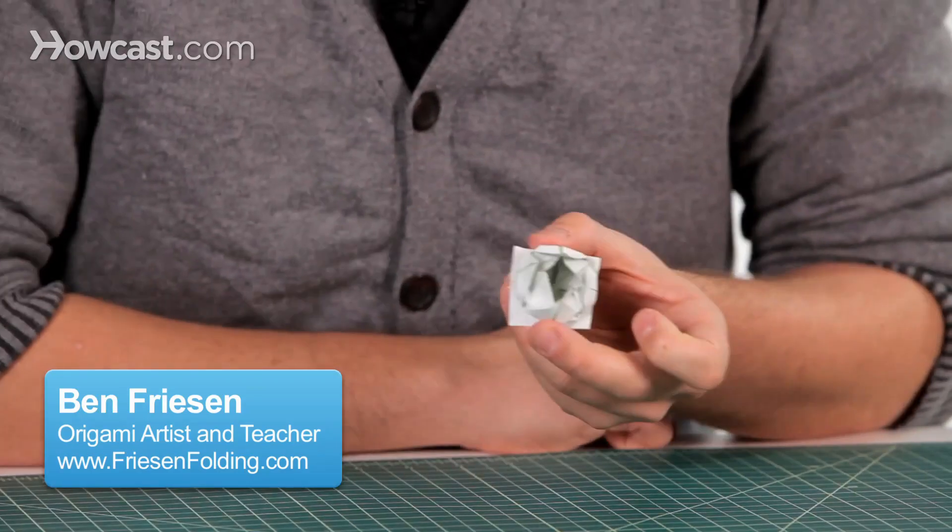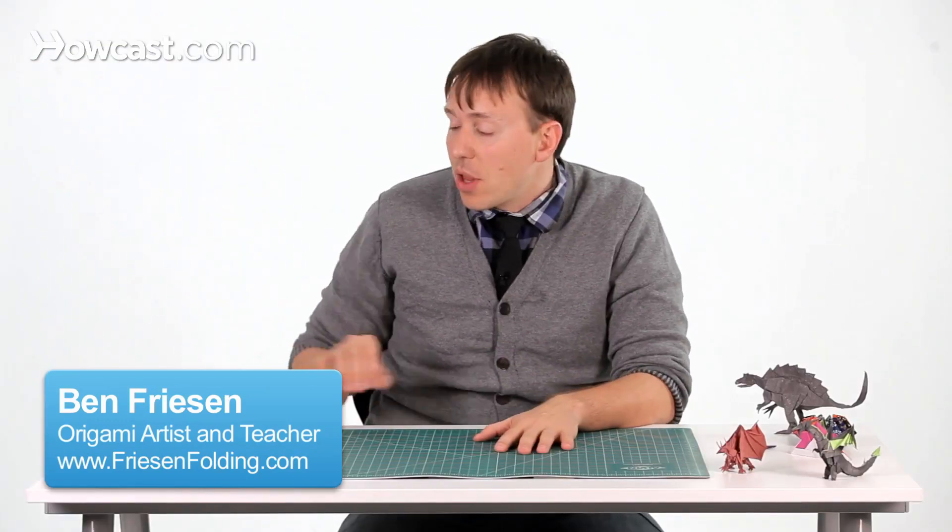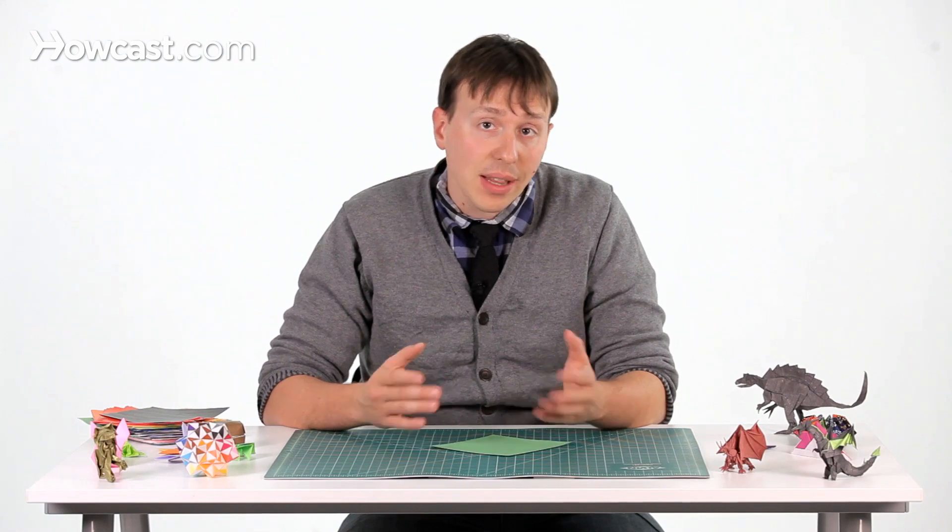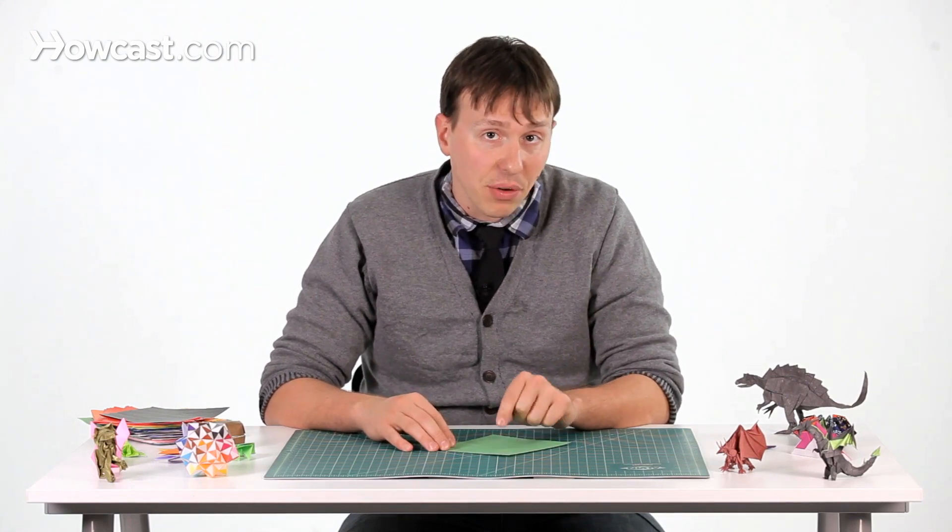So these are the instructions for an origami lotus flower. For the origami lotus flower, we're going to start with a blintz fold. In order to get the blintz fold, we have to find the exact center of the paper.